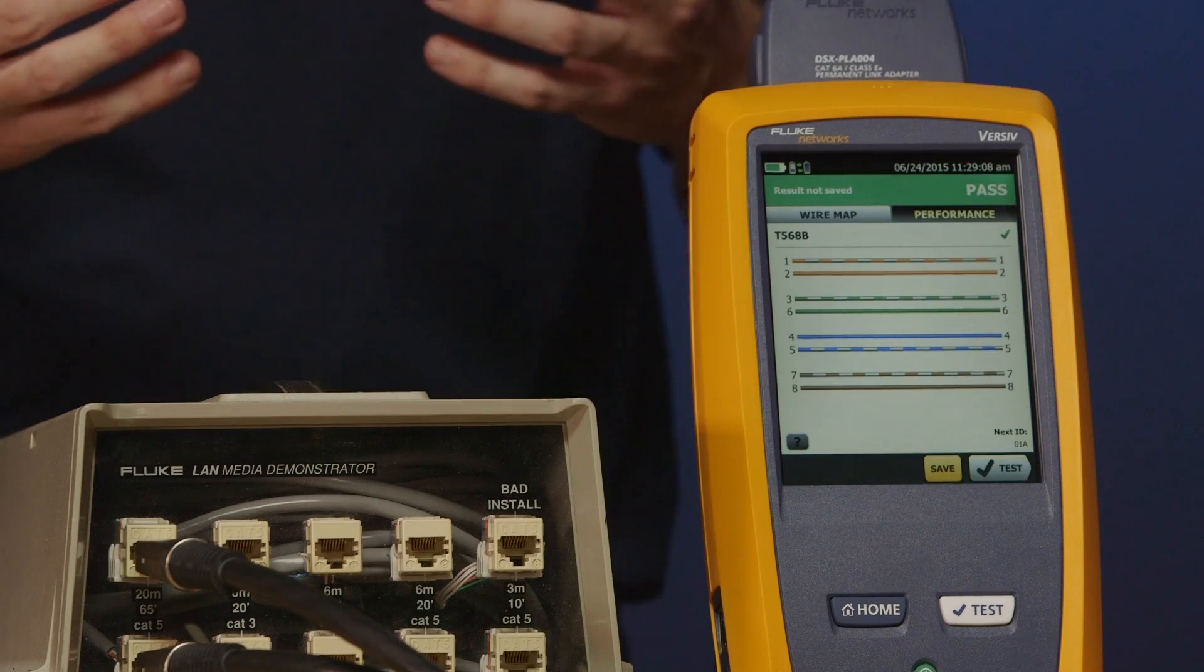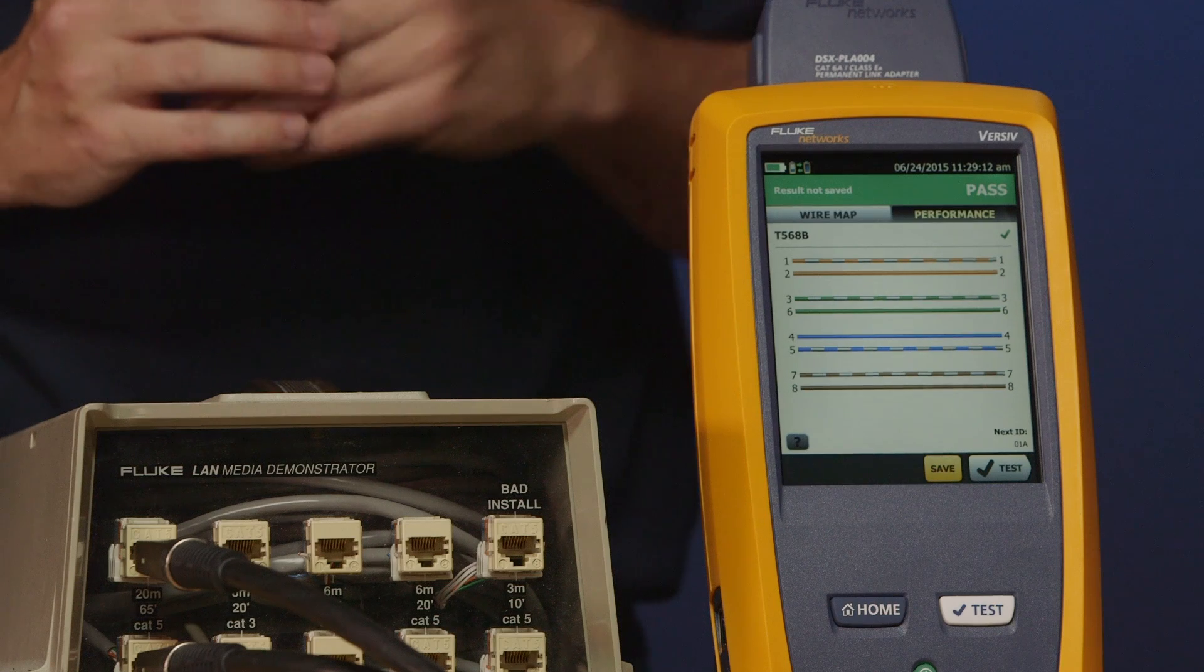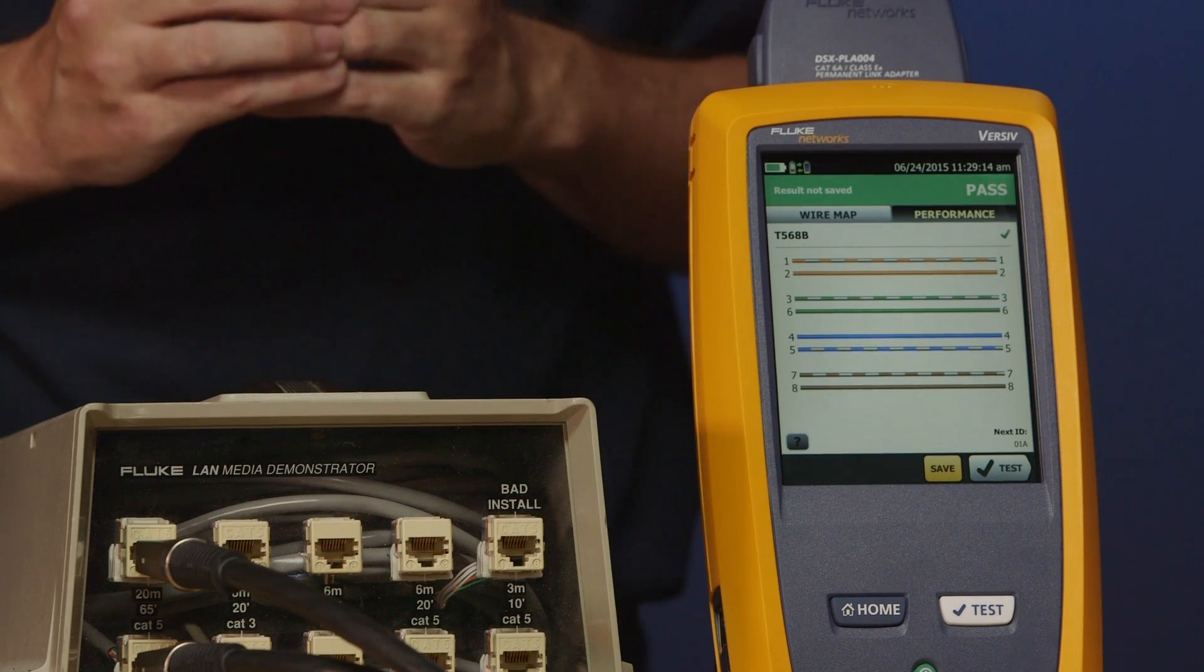And for a Cat 5e test, it's around about eight to nine seconds. Cat 6, Cat 6a is around about 10 seconds. So it's a pretty quick test to do on this tester, certainly much faster than the DTX on Cat 6a. So this tester passed. We see the pass on the top right hand corner. The first thing that we see on there is wire map.